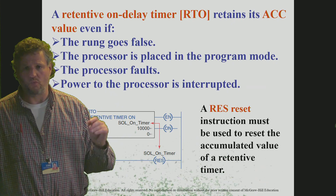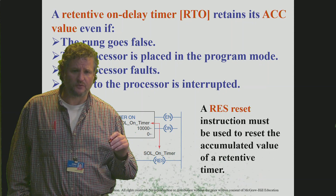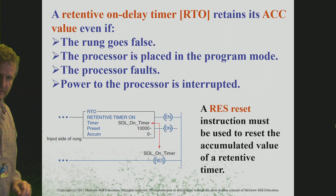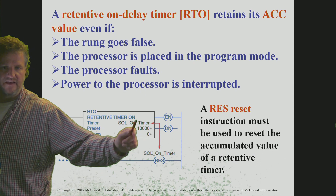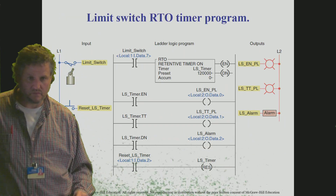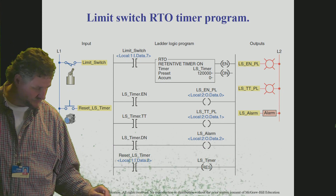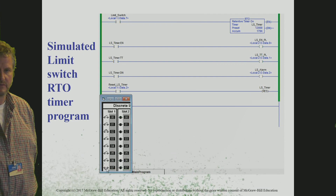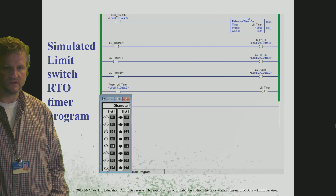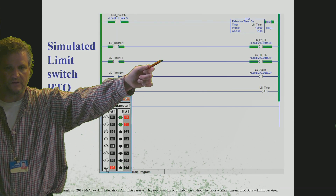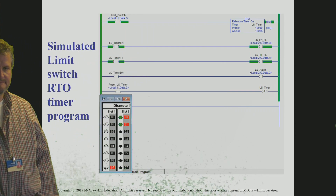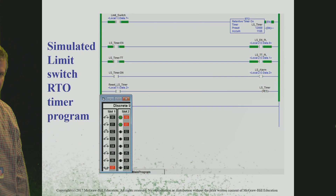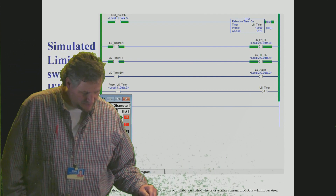The retentive timer works the same way as the timer-on, except it doesn't reset when the input goes off. We're able to retain the value in that timer until we hit a reset. That reset has to be addressed with the same address as your timer to reset it. As you can see in the example, it is timing, then stops timing when you take away the input, then resets when you trigger the reset — going back to zero. The done bit is on as expected, and after reset it starts timing again immediately.